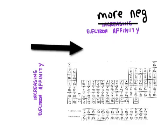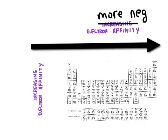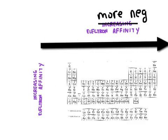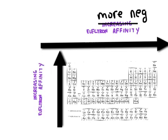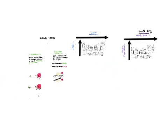And so electron affinity becomes more negative as you go from left to right across the periodic table. And it becomes more negative as you move from the bottom to the top. And so the most negative electron affinity is going to be right up here in this corner of the periodic table. And that's electronegativity and electron affinity.